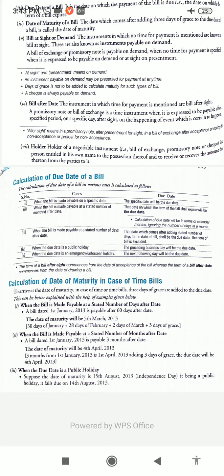Negotiation: a duly written and accepted bill of exchange gives the drawer a right to claim and receive the money mentioned in the bill. The drawer can, according to his will and need, transfer his right to someone else, and that person can again transfer the right to receive money to another person. This transfer of right is called negotiation. In case of a bearer bill of exchange, it can be negotiated merely by transfer of possession of the bill. In case of an order bill of exchange, it can be negotiated by proper endorsement and delivery of the bill. The drawee will make payment to the person whose name has been properly mentioned on the bill.